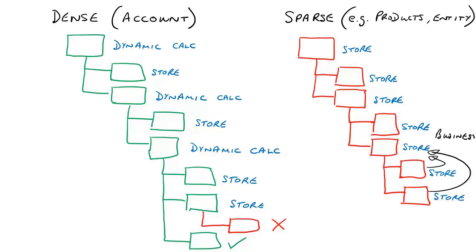In any of the dimensions, members with an FCCS underscore prefix are predefined members. As a result, they cannot be renamed. However, their aliases or descriptions can be customized.